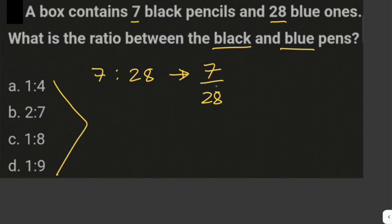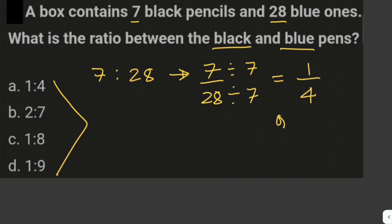Since there is no 7 over 28 in our choices, we need to reduce 7 is to 28 by dividing both the numerator and denominator by 7, since they are both divisible by 7. So this is just 1 over 4, or 1 is to 4. So this is the ratio.